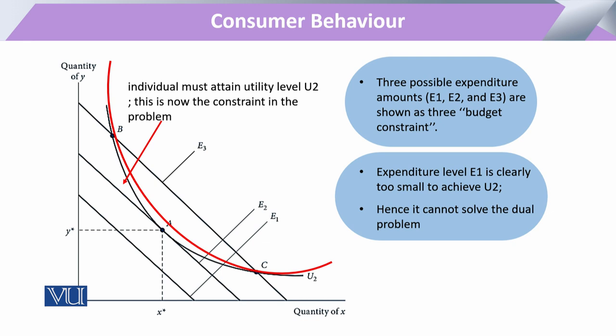It is of a similar nature to the graph we have shown in our various previous lectures. But here we can see that previously the consumer had one budget line, whereas now the consumer has one desired level of utility. This utility level becomes the consumer's constraint — the consumer must attain this utility level in any form. Now the consumer has to check what budget line is available and, by adjusting or optimizing his budget, attain this utility level.